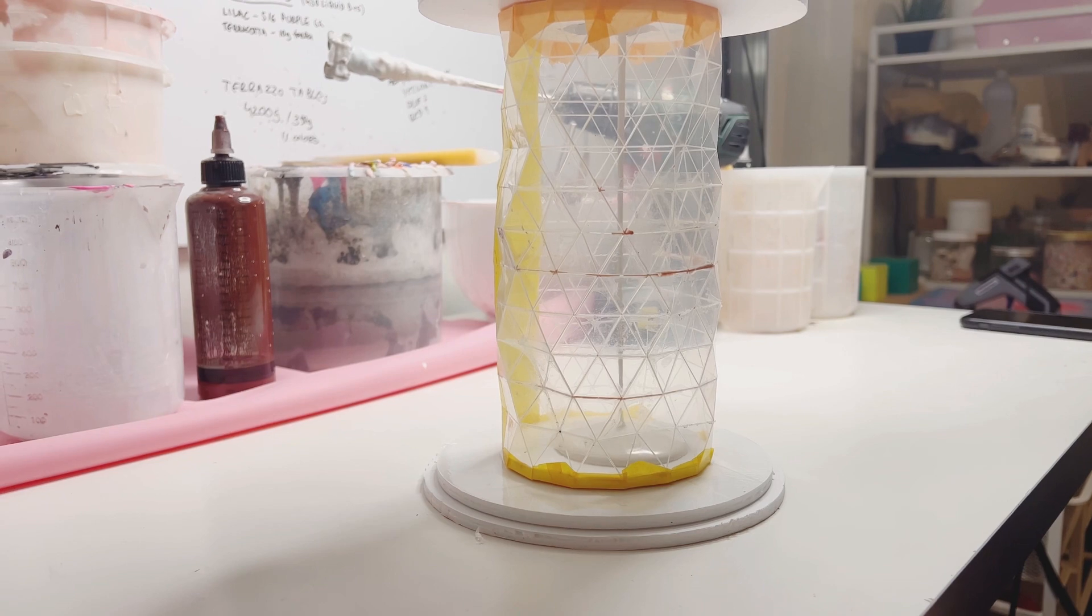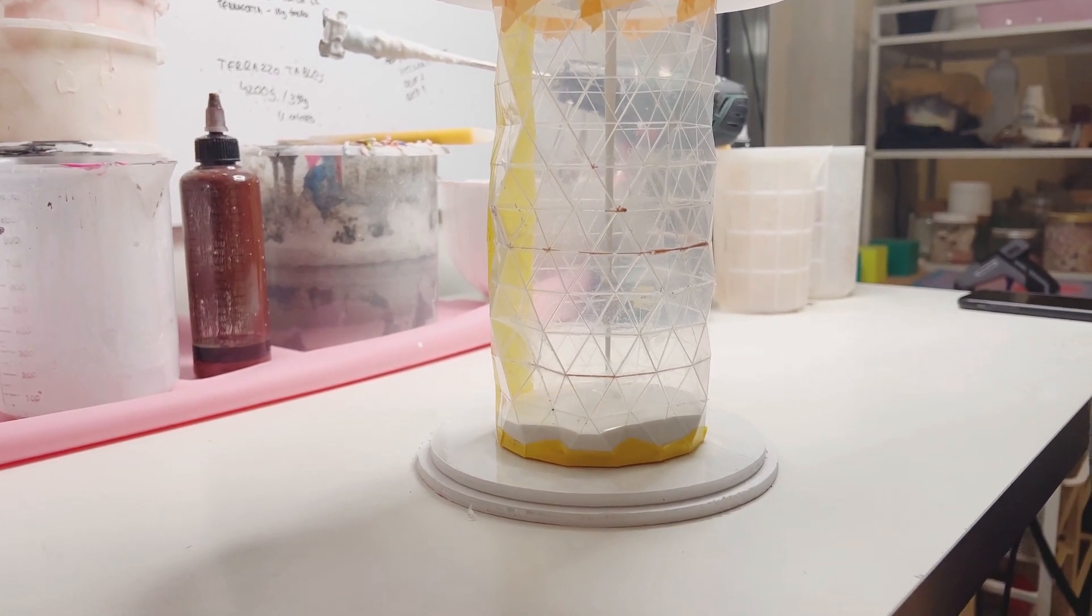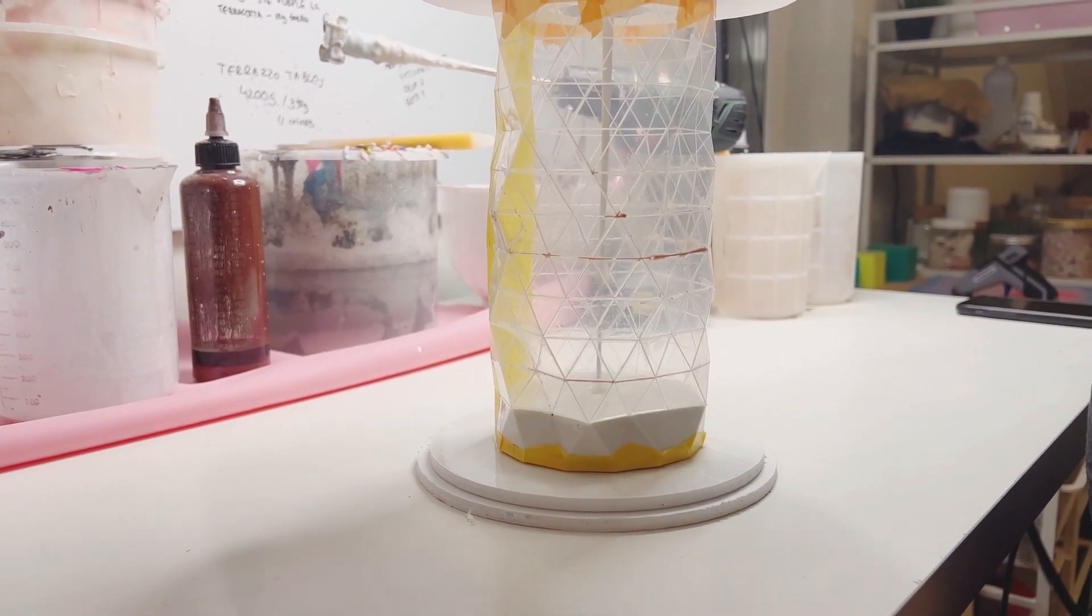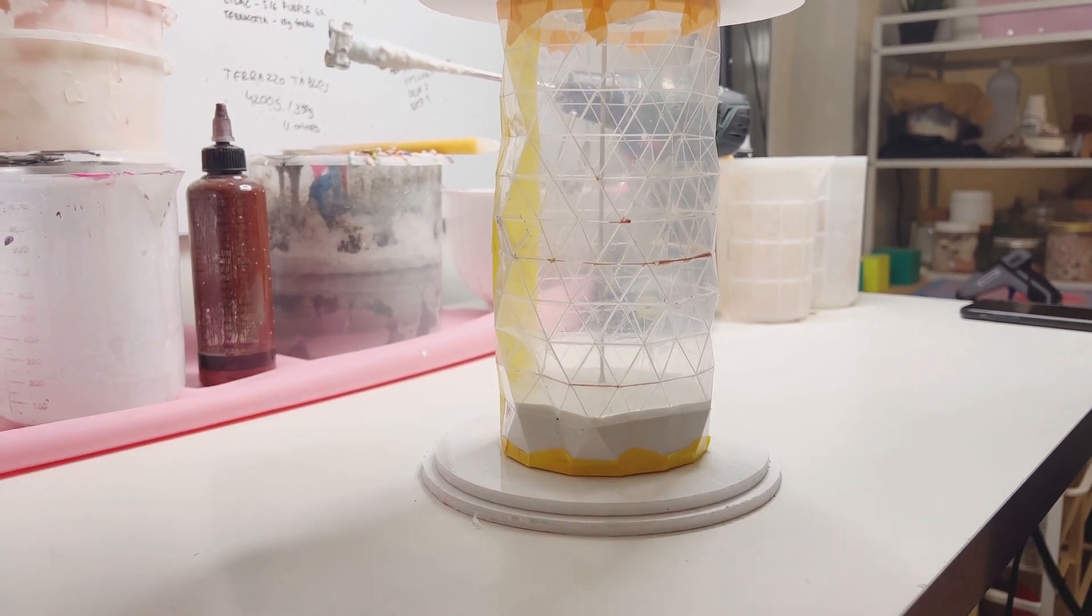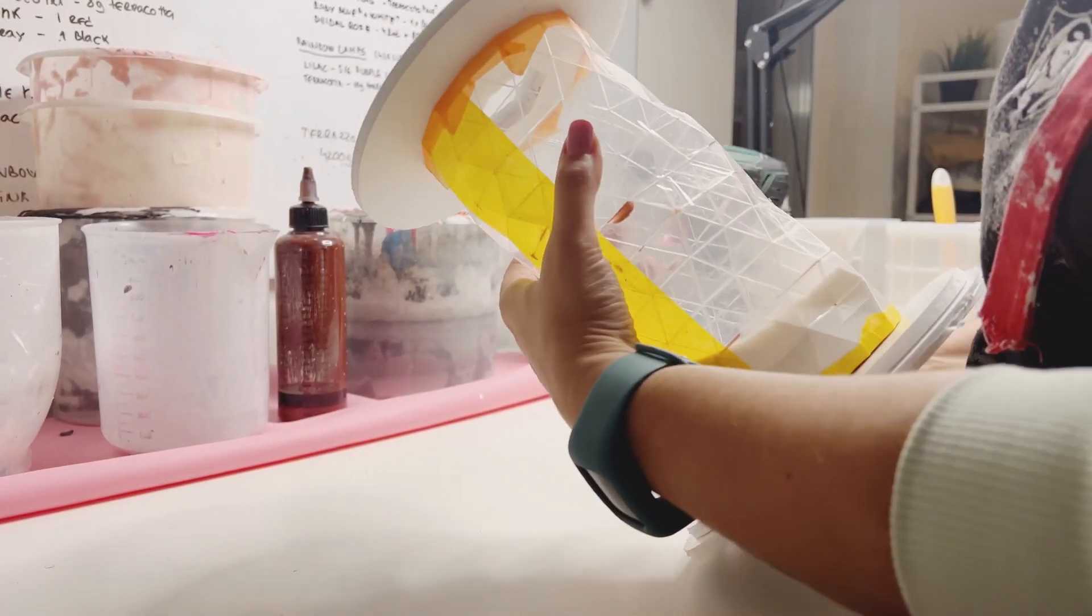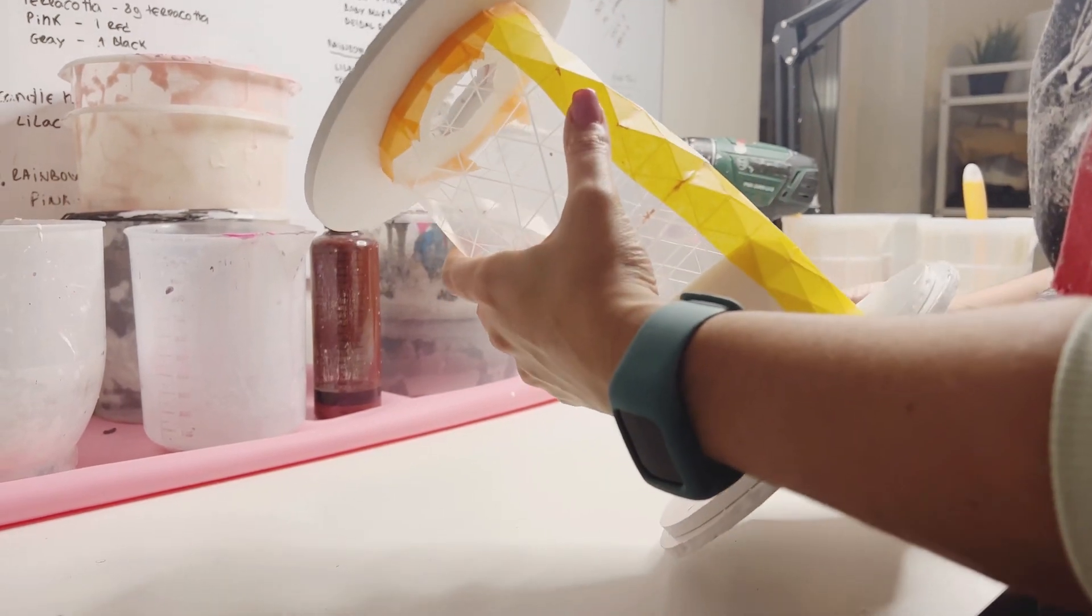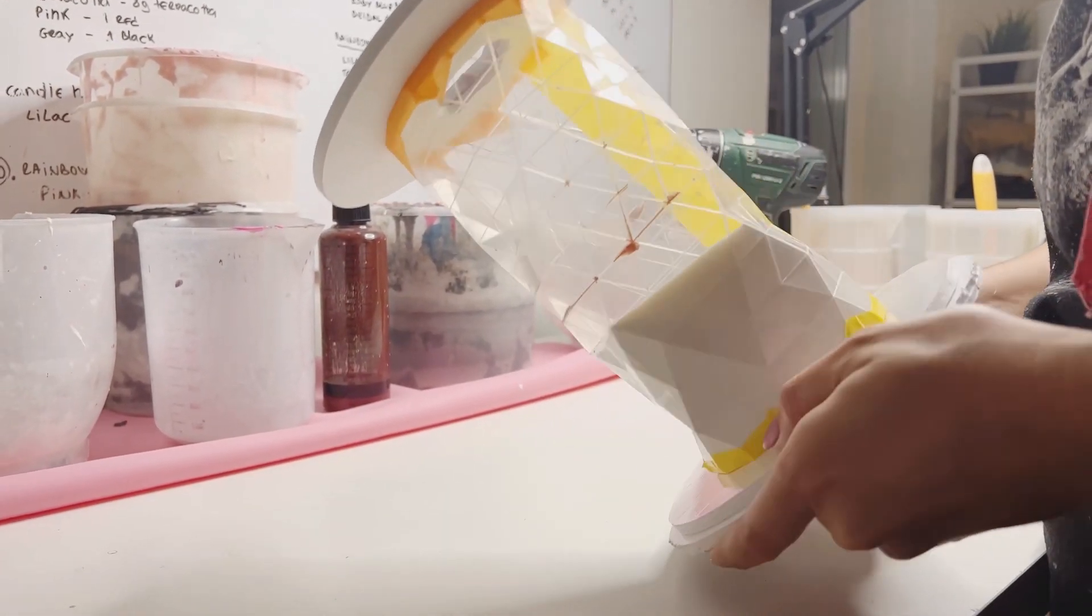Now let's pour the composite into our mold and you will be surprised because we won't fill the mold until the top. If we would fill the mold until the top, it would stop being a vase because we want to make sure it has that opening so we can put some flowers in it.